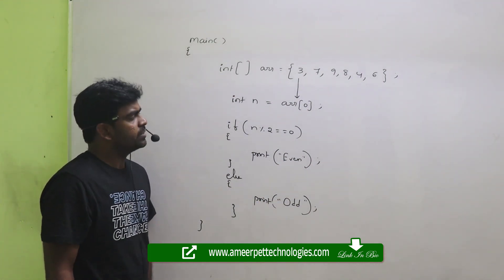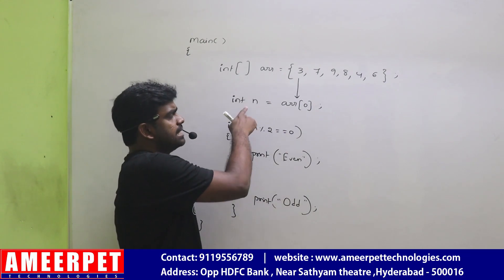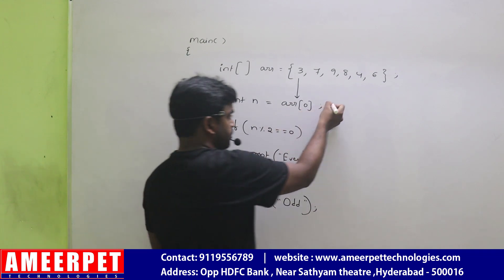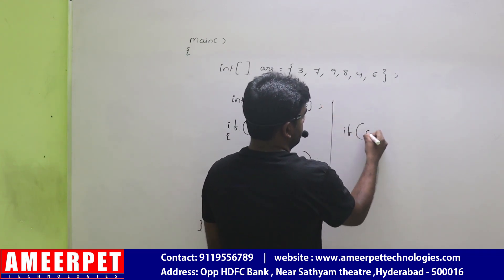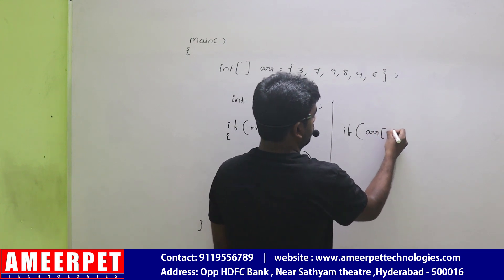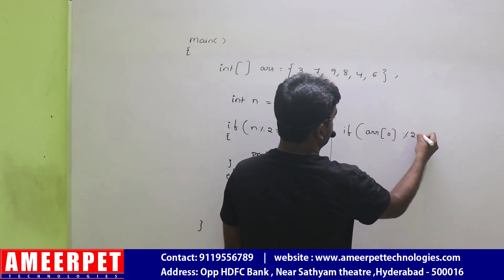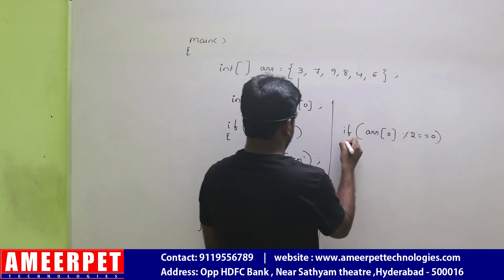The concept remains the same. If I don't want to use this n variable directly, I am checking ARR of 0. ARR of 0 mod 2 equal to 0, then...